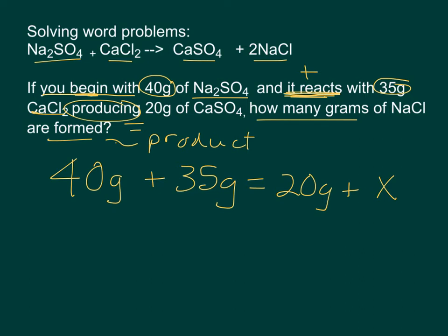I can say I've got 40 grams of that. I've got 35 grams of CaCl2. This is the same as an equal sign. And again, I look for the compounds that I have up in the equation above.